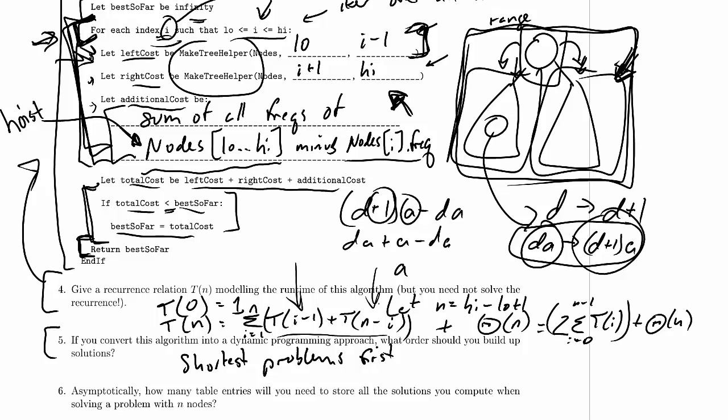Now what order do we solve problems among a bunch of problems that are all the same length? It doesn't matter. They cannot depend on each other because each problem only depends on shorter problems. So as long as we solve all the problems of length 1 before we solve all the problems of length 2, and all the problems of length 2 before we solve all the problems of length 3, we should be fine.